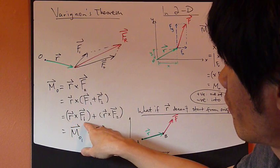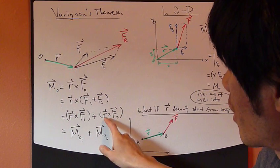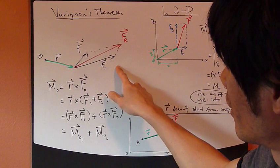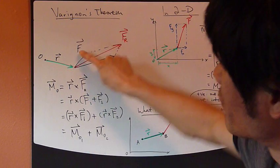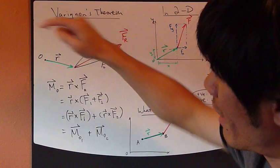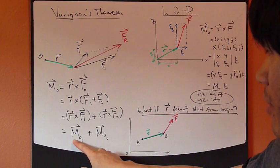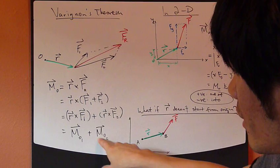plus R cross F2 right here. And R cross F1 is exactly the moment of F1 component vector about point O, which is M_O1. This is exactly M_O2.